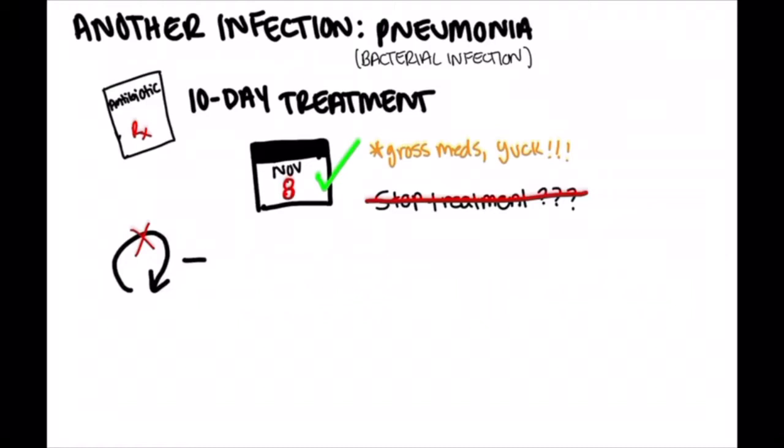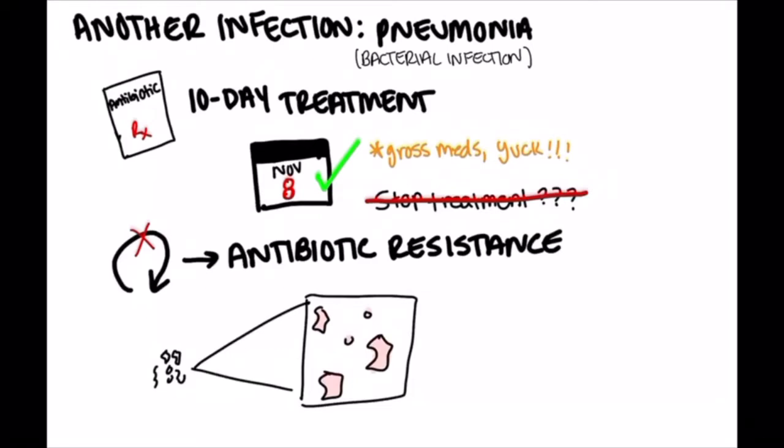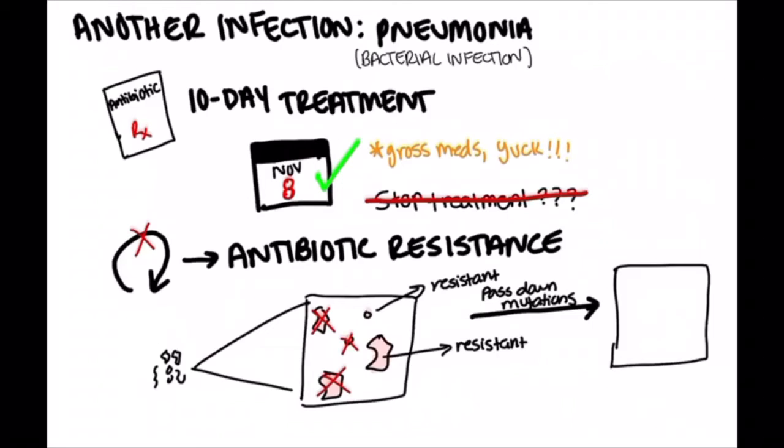Prematurely stopping the cycle of your antibiotic treatment is also a cause of resistance. Why? Aren't they dead? Sort of. The majority of the bacteria causing your infection are gone. However, there are still some remnants who, again, take advantage of their mutations and pass it on to the next generation of bacteria. This means you still have pneumonia and it won't go away easily this time around.